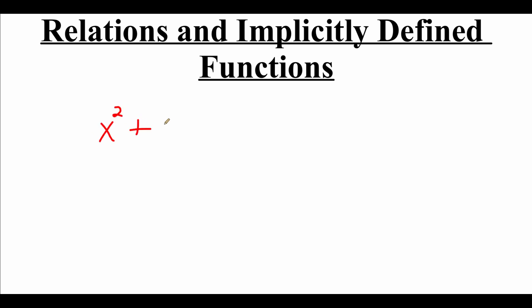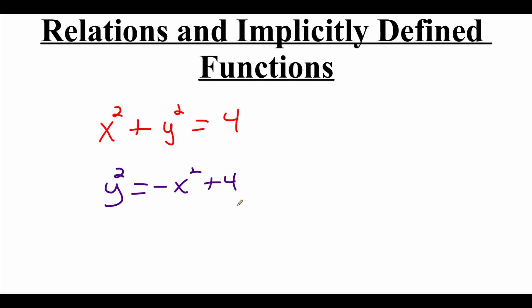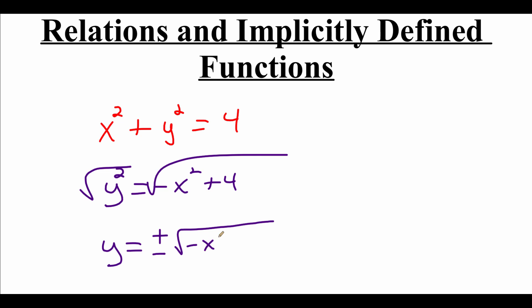Now I want to go back to that equation we were talking about earlier with that circle: x squared plus y squared equals 4. We know for sure that this is not a function itself, but we can actually rewrite this in a way so that it is made up of two separate functions. What I want to do is solve to get y alone. The first thing I would do is subtract x squared over to the other side, so I would get y squared equals negative x squared plus 4. Then if I want to get rid of the squared on my y, I need to square root both sides.